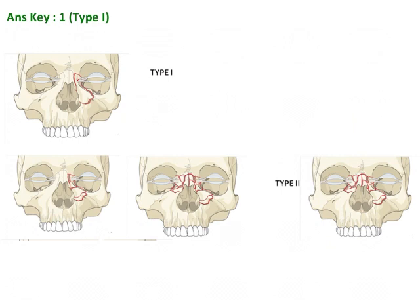Type 2 fracture is a comminuted fracture with more fragments than type 1. However, the canthal ligament is still attached to the primary bone and there is no displacement of the canthal ligament.